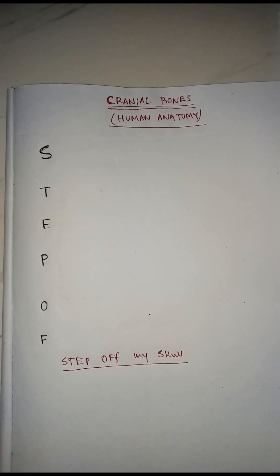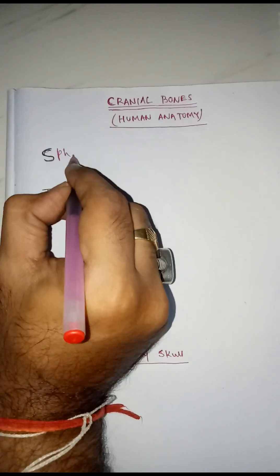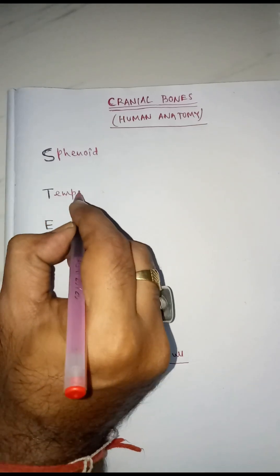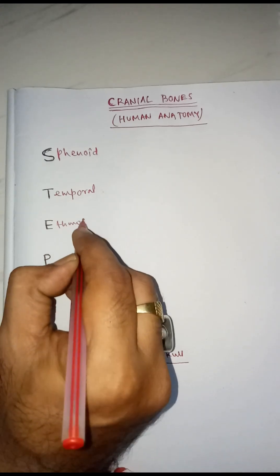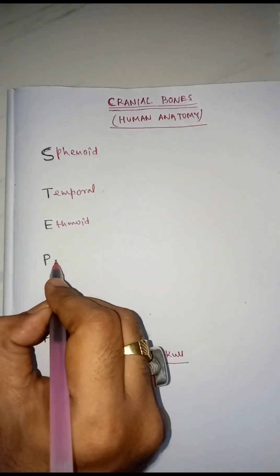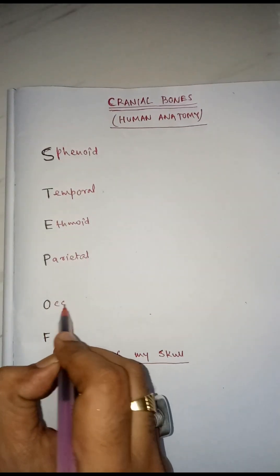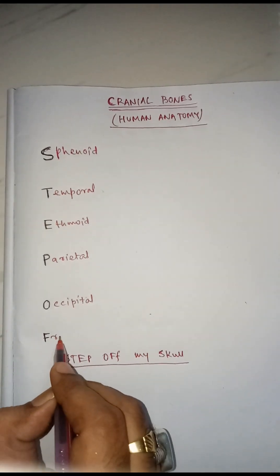I have constructed here a statement called 'Step of My Skull.' The first letter of each word indicates the name of a cranial bone in order: S stands for Sphenoid, T for Temporal, E for Ethmoid, P for Parietal, O for Occipital, and F for Frontal.